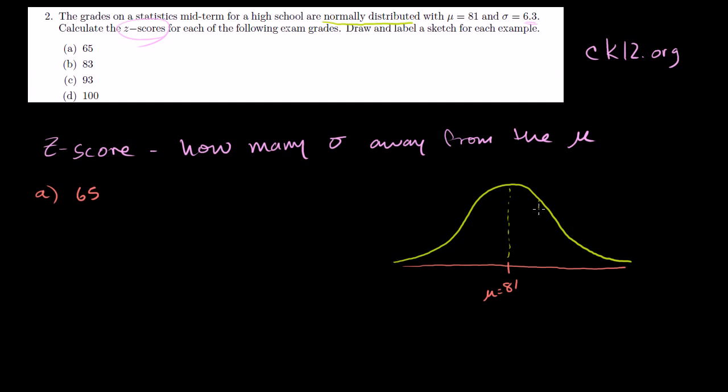And the standard deviation is 6.3. So one standard deviation above and below is going to be 6.3 away from that mean. If we go 6.3 in the positive direction, that value right there is going to be 87.3. If we go 6.3 in the negative direction, that gets us to 74.7. So that's one standard deviation below and above the mean. And then you would add another 6.3 to those for two standard deviations, and so on and so forth. So that's a drawing of the distribution itself.